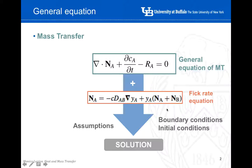If we combine these two, this general equation and the Fick rate equation, and we apply certain assumptions in order to simplify the differential equation, plus the application of the boundary conditions and the initial conditions, we can finally solve the system and calculate the molar flux of the mass transfer.